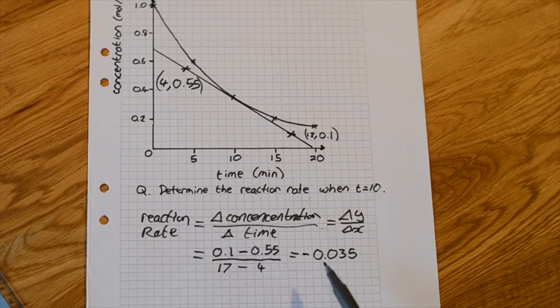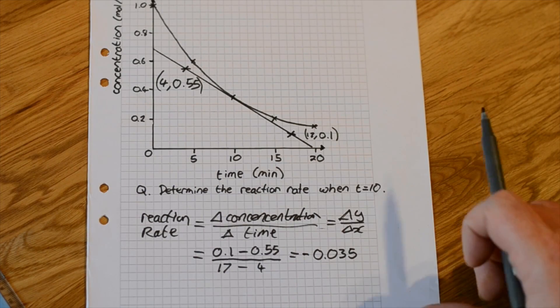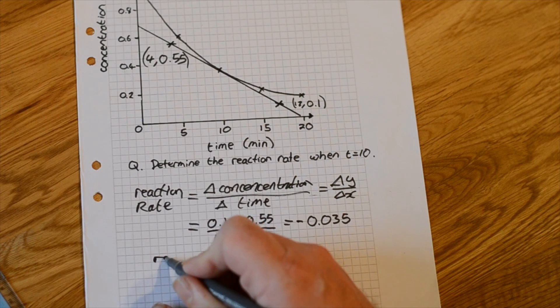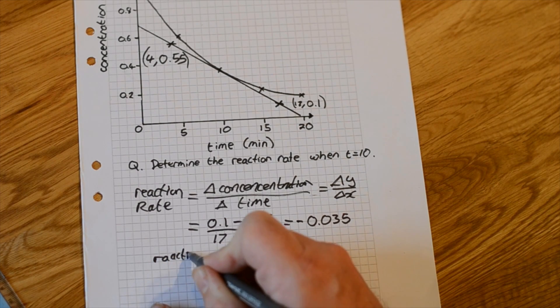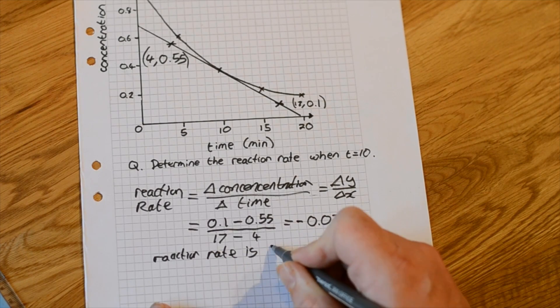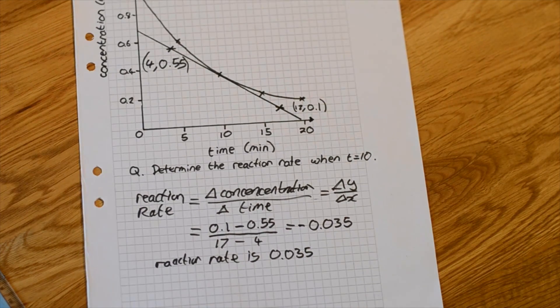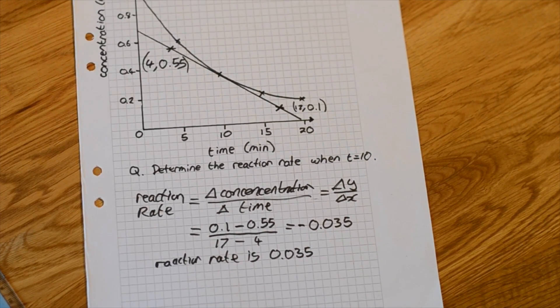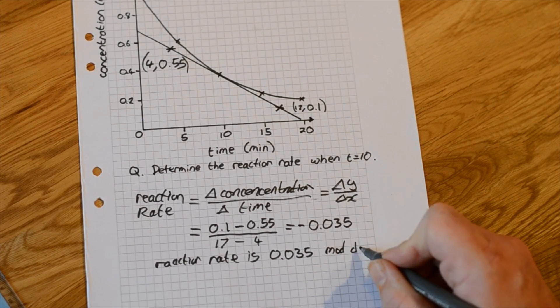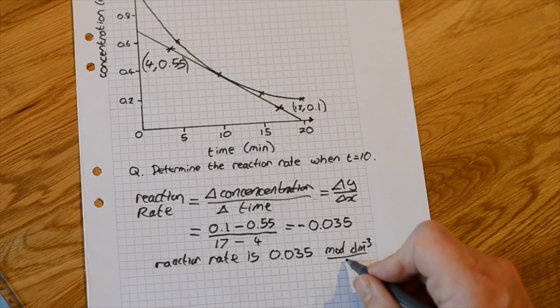So we see here the gradient obviously is going to be negative. We get a negative value. But the reaction rate is going to be expressed as positive. So the reaction rate is 0.035. That's going to be in moles per decimeter cubed per minute.